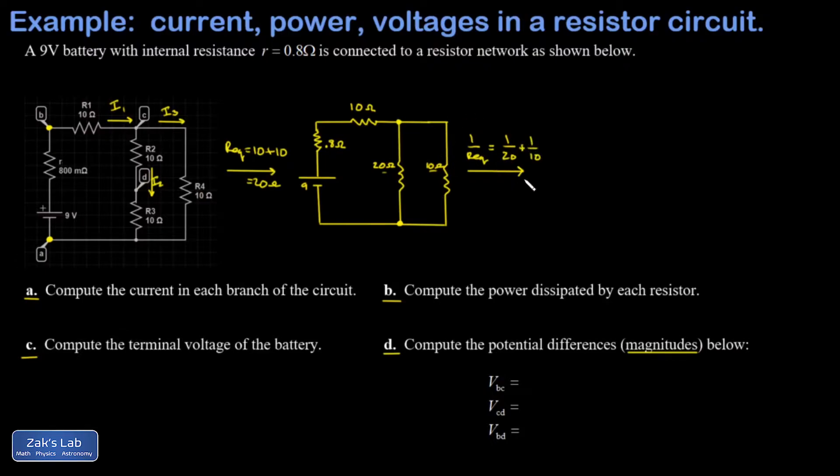One over the equivalent is equal to the sum of the reciprocals of the individual resistances. You plug those into a calculator, one over 20 plus one over 10, and then take one over the result to get REQ. And I get 6.67 ohms for this, just keeping three sig figs on everything. And we redraw our circuit again.